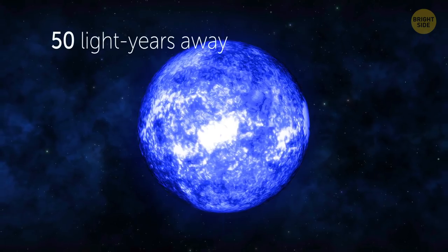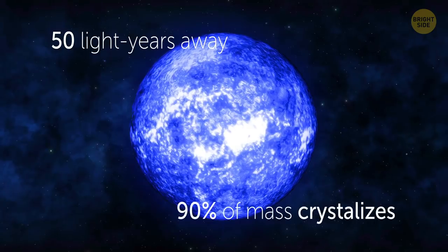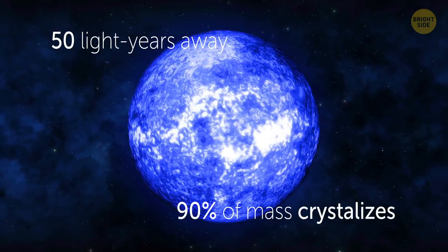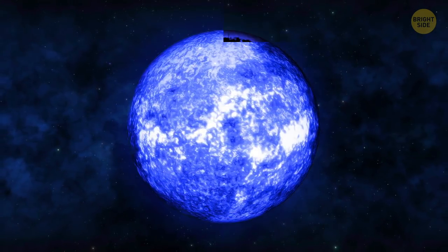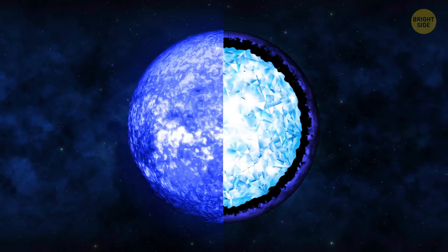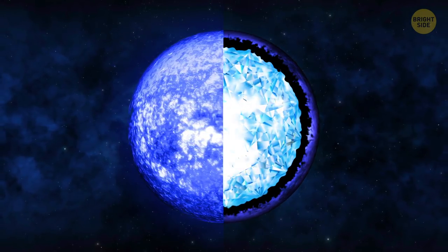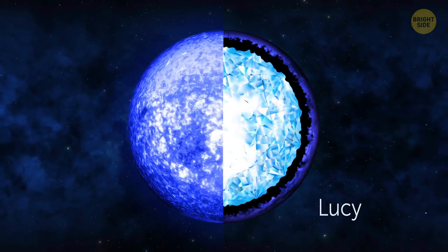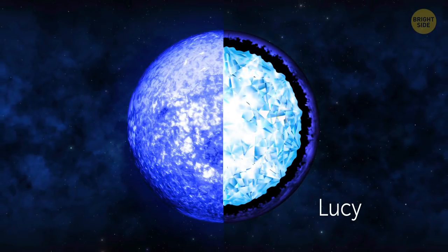There's a star 50 light-years away from Earth, 90% of whose mass crystallizes and the interior is made of carbon. That means it's the biggest diamond ever found. Oh, and they named it Lucy. You know, Lucy in the sky with... never mind.